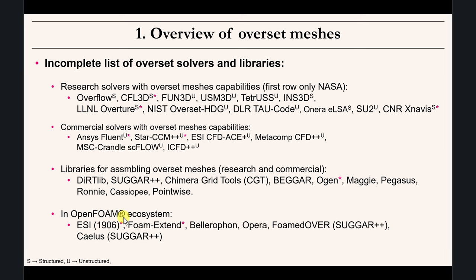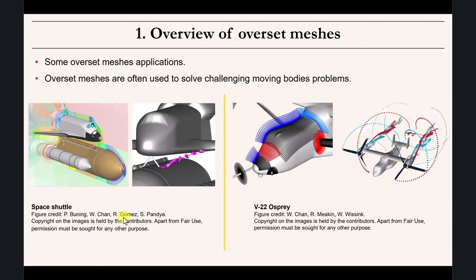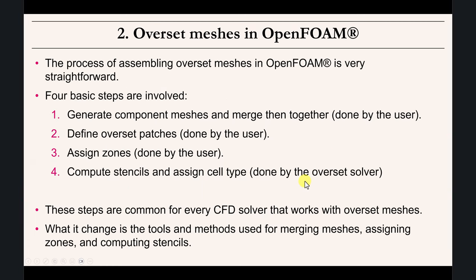To show a few example images: here you have the space shuttle — a really tricky geometry to mesh if you're using structured meshes. This illustrates the concept: for very complicated geometries, generating a single block is almost impossible, so you split everything into different patches and assemble them together. And you can also do it with moving bodies, as shown in another example.